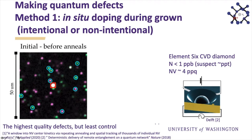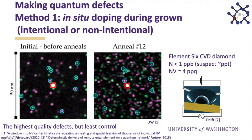These highest-purity defects have the best quantum properties and have been used in quantum protocols including long-distance entanglement between two NV centers and a loophole-free test of Bell inequalities. They've been used by simply finding an NV center and milling out a lens around it to enhance light collection. We can also track individual defects as we heat the sample, forming more defects from existing impurities, and learn about the temperatures at which they form.